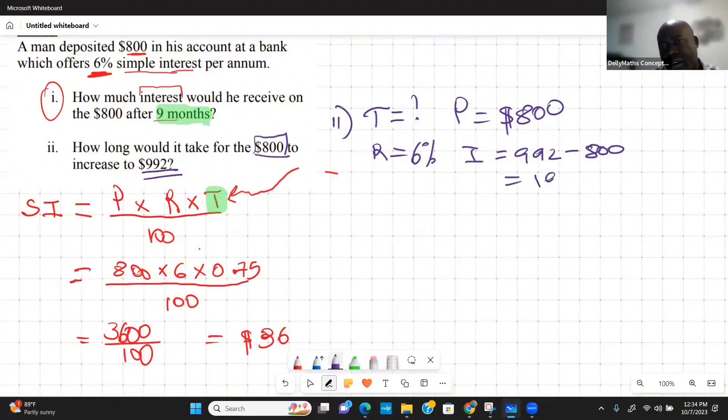So this $992, if I minus the $800, it's going to tell me the interest earned over the time that we're investigating is $192. We want to know the time that it took the $800 to move to $992, which suggests that the interest would have been $192.